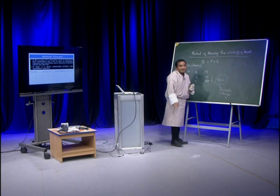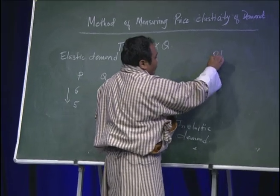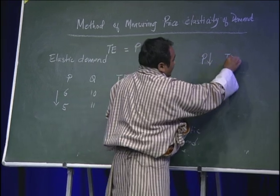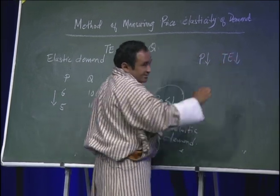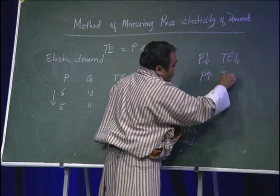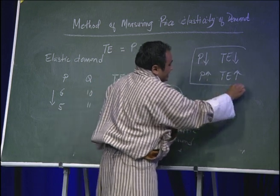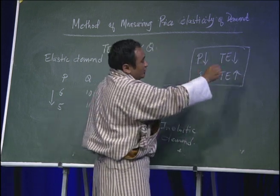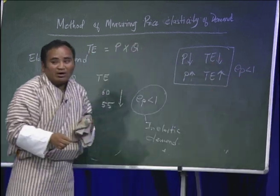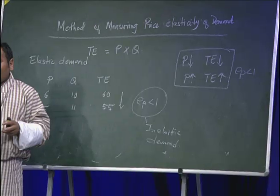Once again, the relationship is: when the price of a commodity decreases, if total expenditure also decreases, and when price increases and total expenditure also increases, in such a situation your EP will be less than 1, meaning it is inelastic demand.